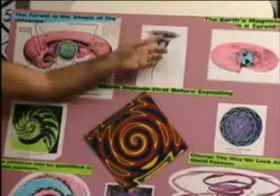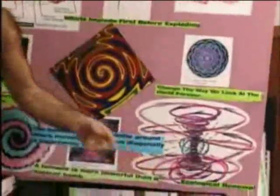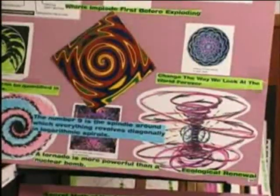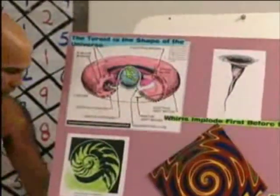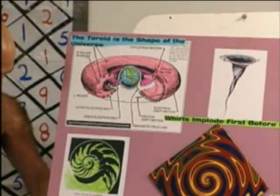A hole disappears into nothing, but a black hole turns into a white hole. It decompresses out. Here's the Earth's magnetosphere in a toroid. These are all based on a vortex.